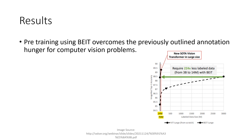What are the results of BEIT? Pre-training using BEIT overcomes the previously outlined annotation hunger. As seen in the graph, BEIT requires 224 times less labeled data. Whereas approaches like ViT reached 88.5% top-1 accuracy with almost 3 billion images, BEIT achieves the same with only 14 million images.